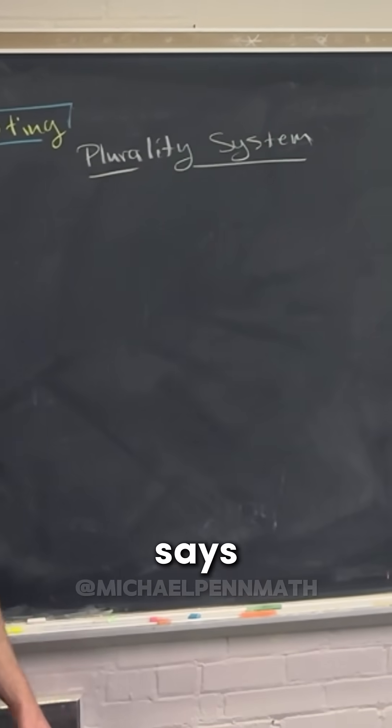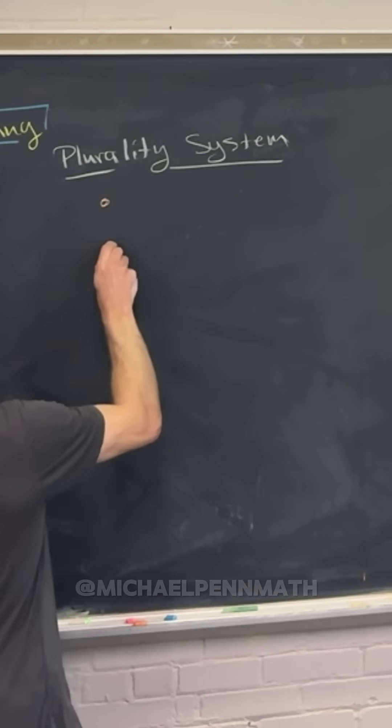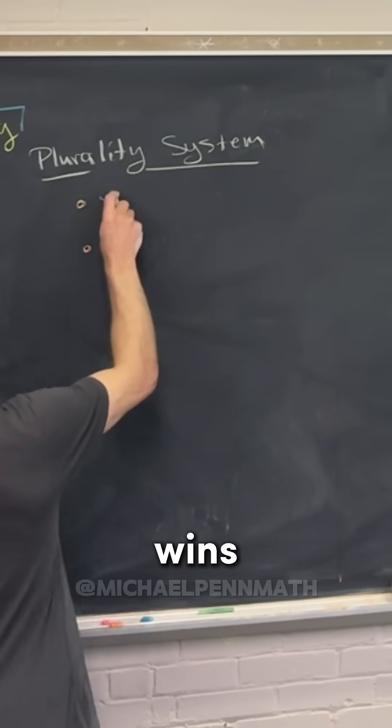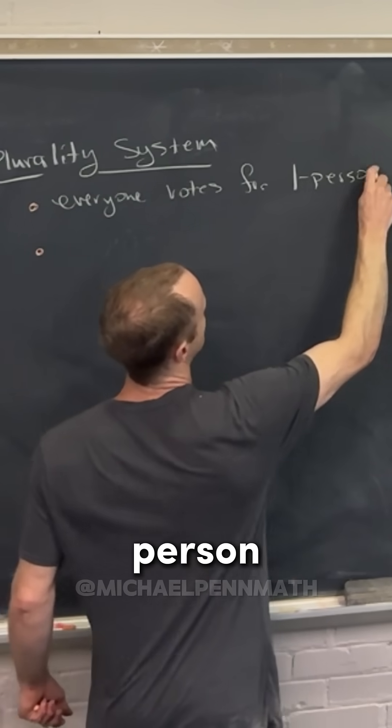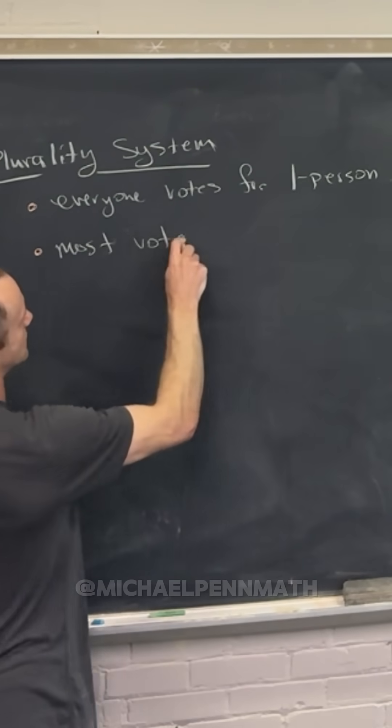Well, it says that everyone votes for a single candidate and the person with the most votes wins. So everyone votes for one person and then most votes wins.